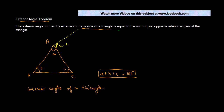The exterior angle is equal to the sum of two opposite interior angles of the triangle. This exterior angle will be equal to the sum of two opposite interior angles. Which are the two opposite interior angles? B and C. So angle E is always going to be equal to B plus C.